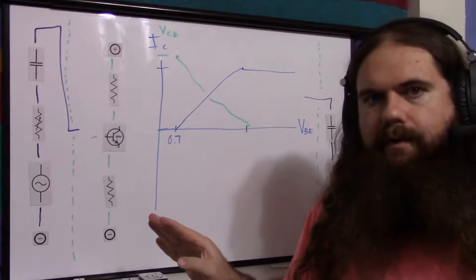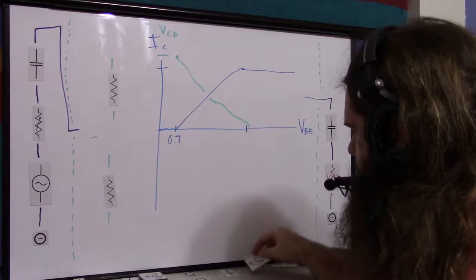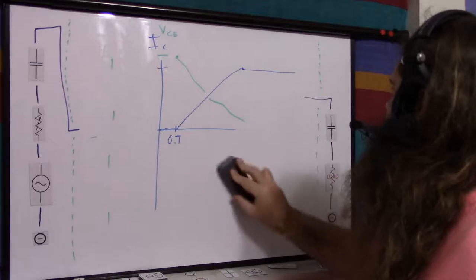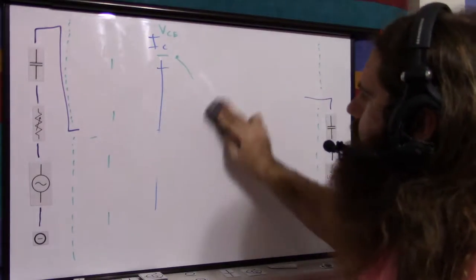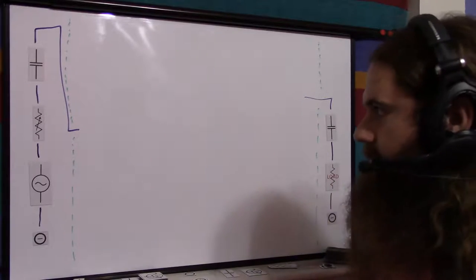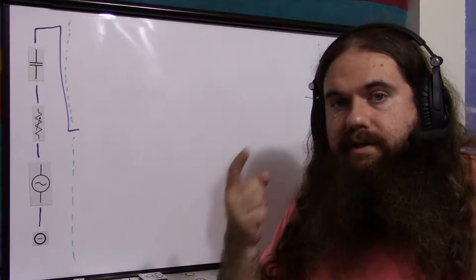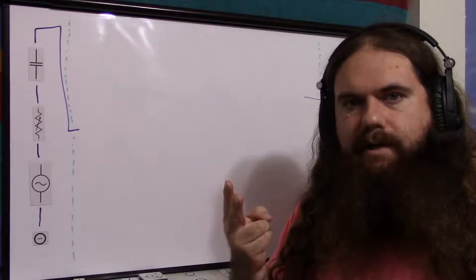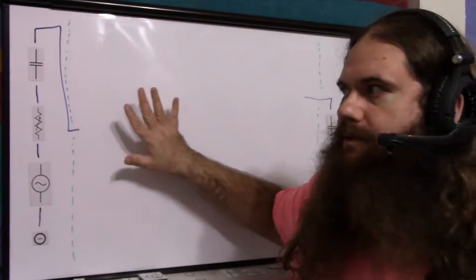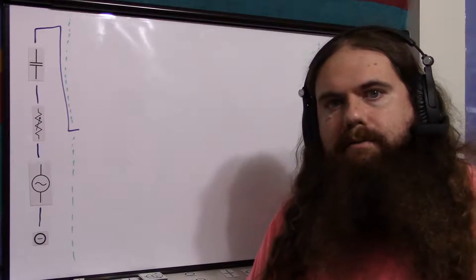I wanted to go through all this because this is the most important part — the meat and potatoes. Transistors are one of the most important things in electronic circuitry. They're the steak; your resistors and capacitors are the garlic and onions. But transistors are basically what makes everything possible beyond a light switch.